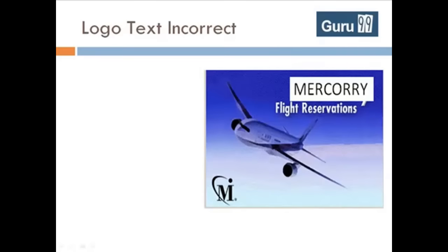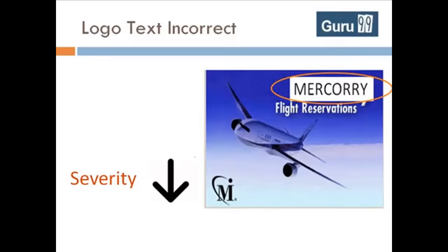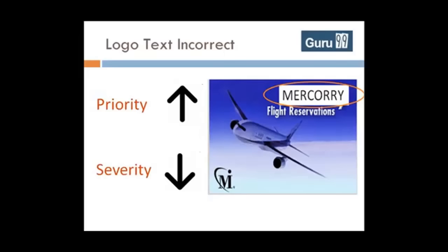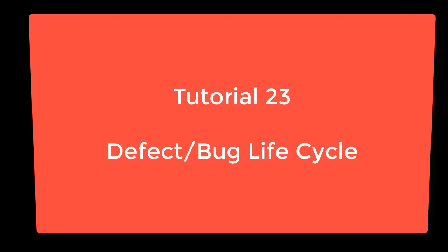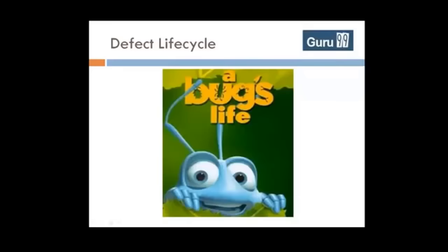A defect could have a very low severity but a high priority. For example, if there is an error in the text of the logo of the Flight Reservation application, its severity is low since it does not affect any functionality, but it needs to be fixed at high priority since you do not want to ship your product with an incorrect logo. Likewise, a defect could be high severity but low priority — for example, a problem with email functionality that causes the application to crash (high severity), but the functionality is scheduled for the next release cycle, so it can be fixed later (low priority).